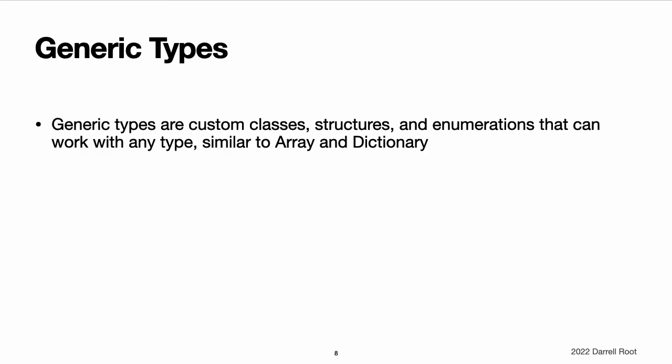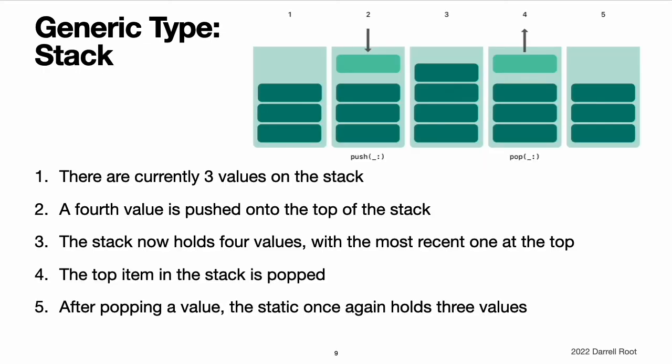Generic types. In addition to generic functions, Swift enables you to define your own generic types. These are custom classes, structures, and enumerations that can work with any type, in a similar way to array and dictionary. This section shows you how to write a generic collection type called stack. A stack is an ordered set of values similar to an array, but with a more restricted set of operations. An array allows new items to be inserted and removed at any location, but a stack allows new items to be appended only to the end of a collection, known as pushing a new value onto the stack. Similarly, a stack allows items to be removed only from the end of the collection, known as popping a value off of the stack.